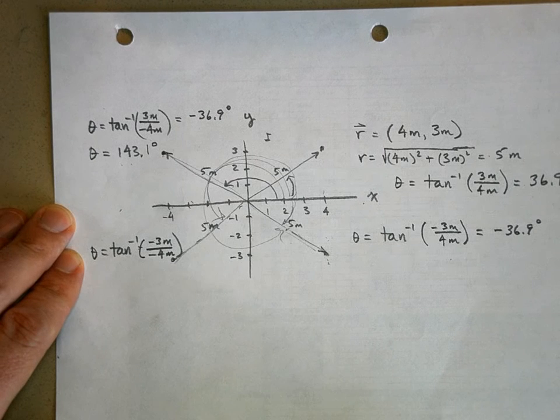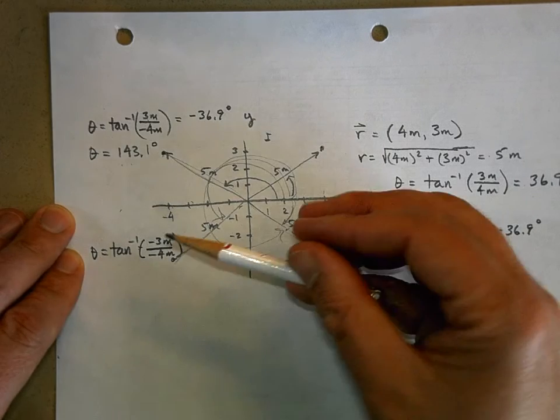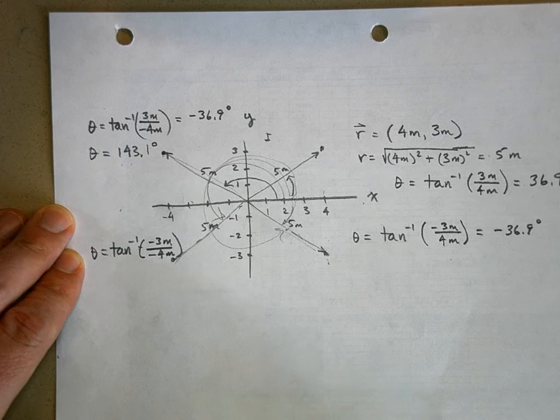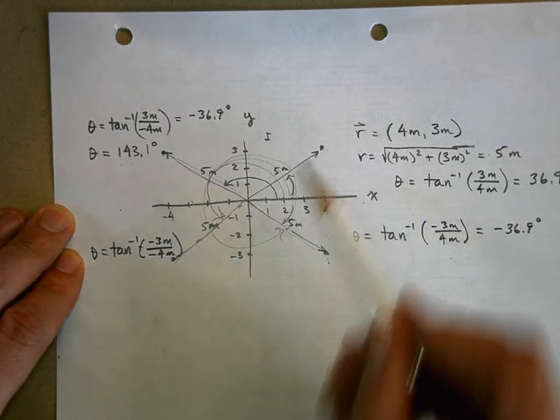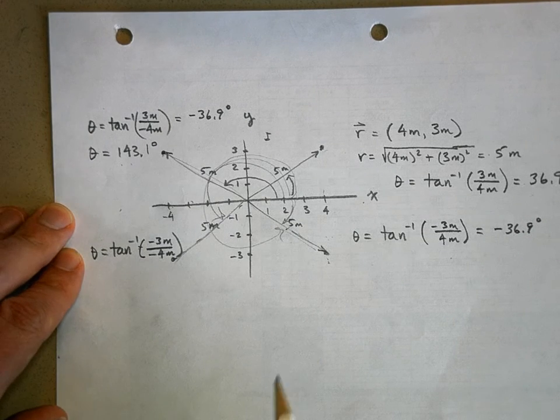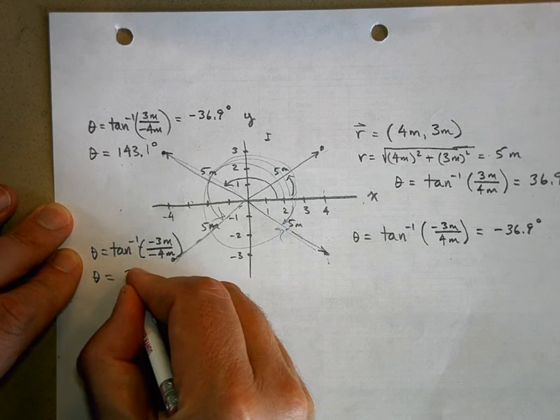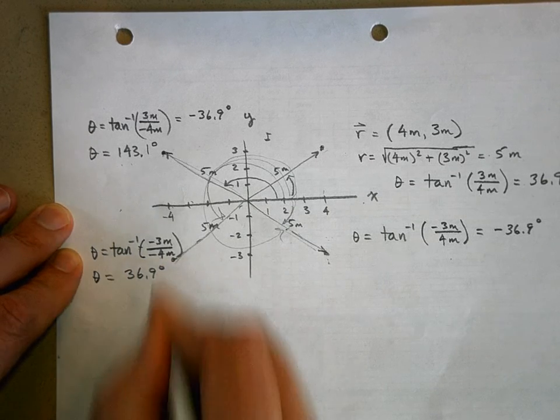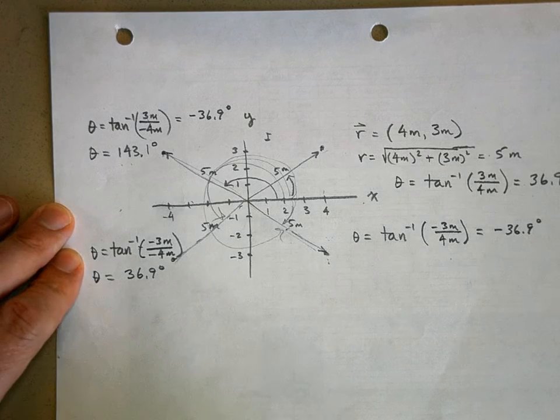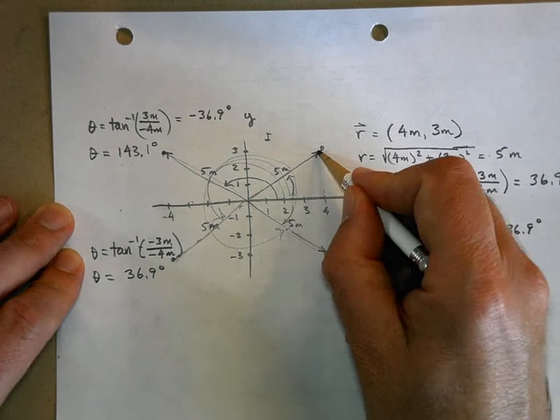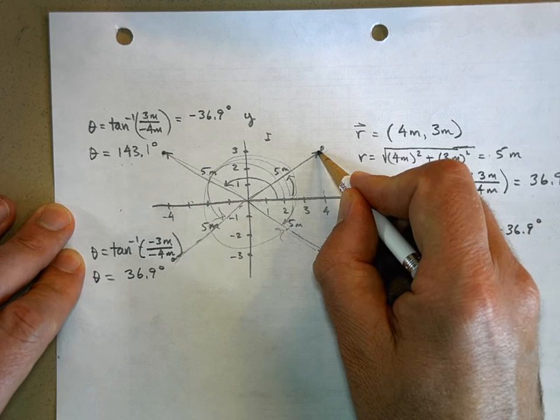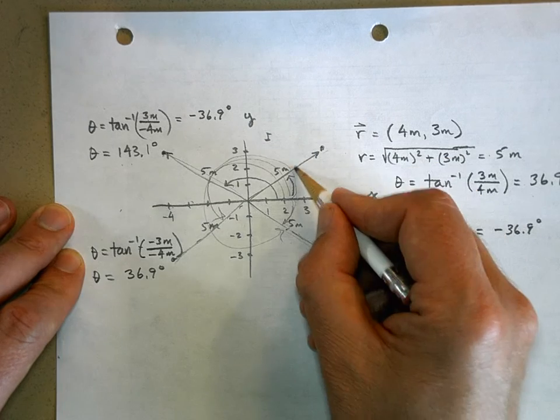It's positive 0.75. A negative divided by a negative is a positive. And your calculator is going to think you're in the first quadrant. So when you plug this in your calculator, you get 36.9 degrees. But that's not where you are. Here's 36.9 degrees up here. What do I have to add to it to get to where I really am? 180.